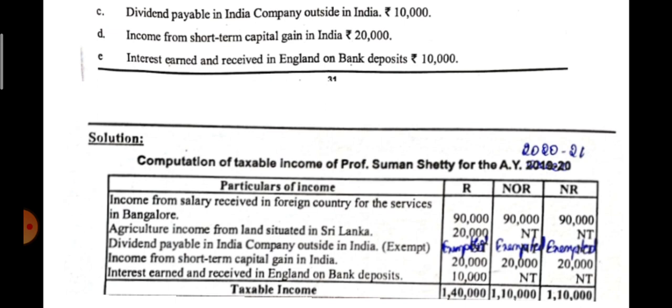For the working note regarding agricultural income earned from land situated in Sri Lanka — since the land is situated outside India, specifically in Sri Lanka, it is earned in Sri Lanka. The point about where it is received is not given in the question, so we assume that agricultural income earned in Sri Lanka is also received in Sri Lanka. For Section B problems, include at least two to three working notes. For Section C problems, include at least four working notes. Incidence of tax liability problems come under Section C.